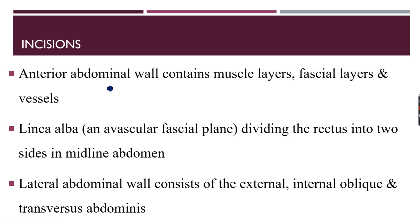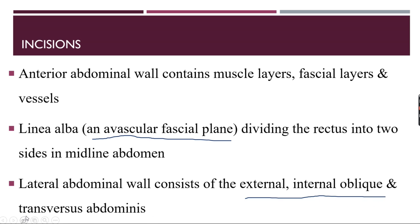The anterior abdominal wall contains various muscle layers, fascial layers, and various neurovascular bundles. The linea alba is basically a relatively avascular fascial plane that divides the rectus into two sides in the midline of the abdomen. In the lateral abdominal wall there are various muscles — the external obliques, internal obliques, and the transversus abdominis.